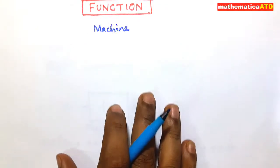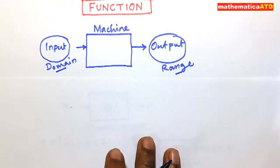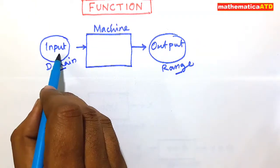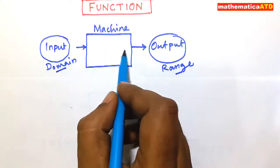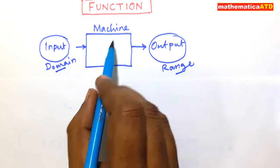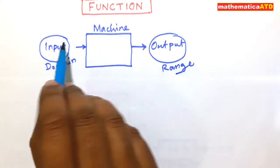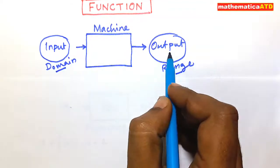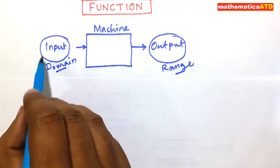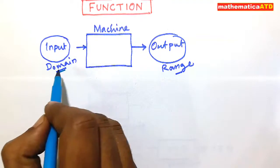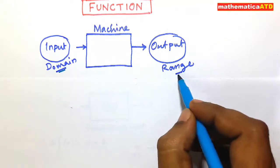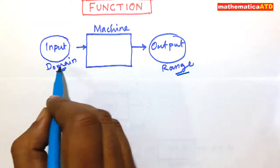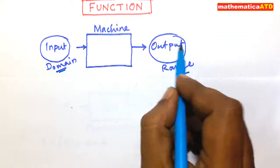Functions are like machines which give a unique output for each of the inputs fed into them. Each machine has certain inputs corresponding to which it gives a unique output. The inputs are nothing but the domain of the function, and the outputs are the range of the function. Only those inputs are in the domain corresponding to which the function gives defined outputs.